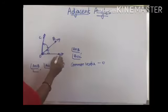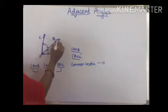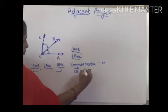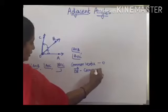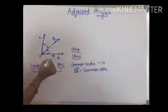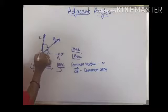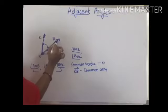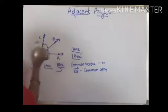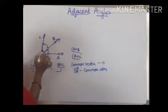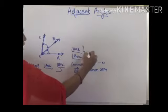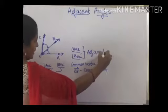Next, if you observe in AOB and BOC, you are having a common arm. What is that? OB. So OB is the common arm. AOB and BOC are having a common vertex, and if you see in AOB you are having OB, and in BOC also you are having OB — that is the common arm. So if they are having a common vertex and a common arm, then we can say these two angles are adjacent angles.